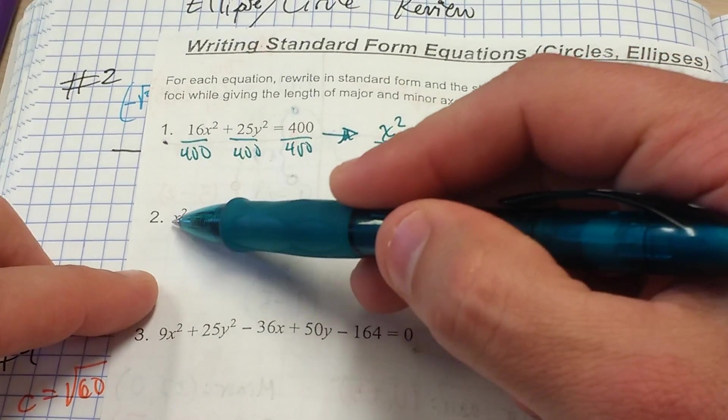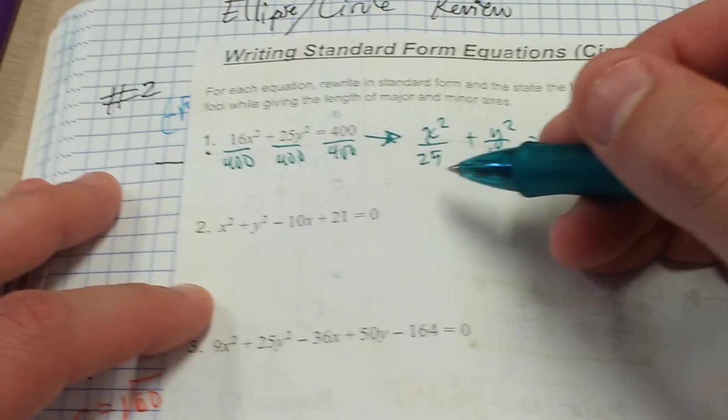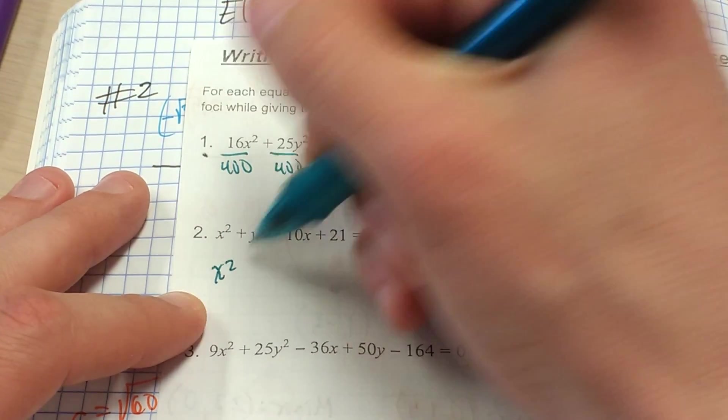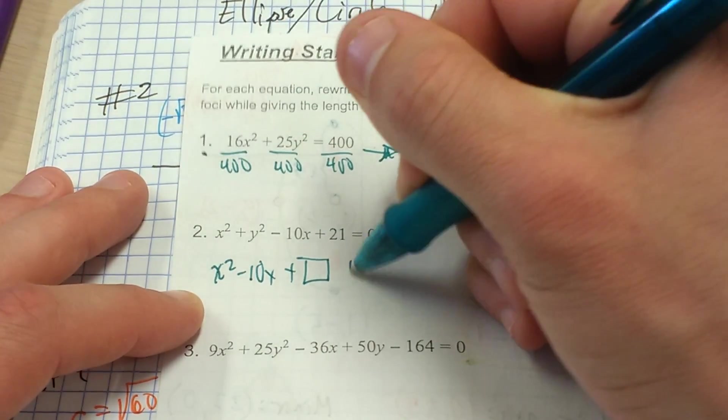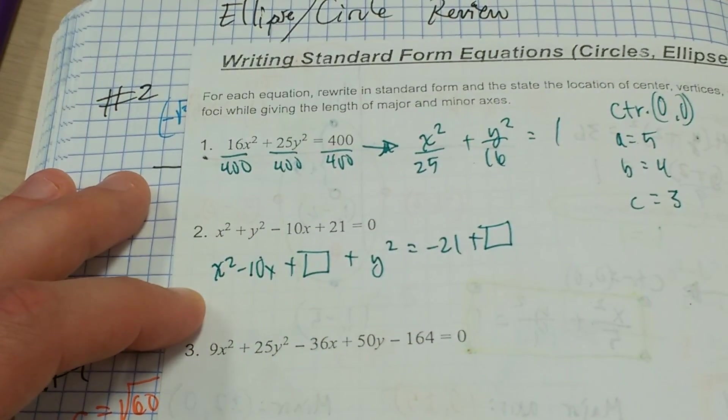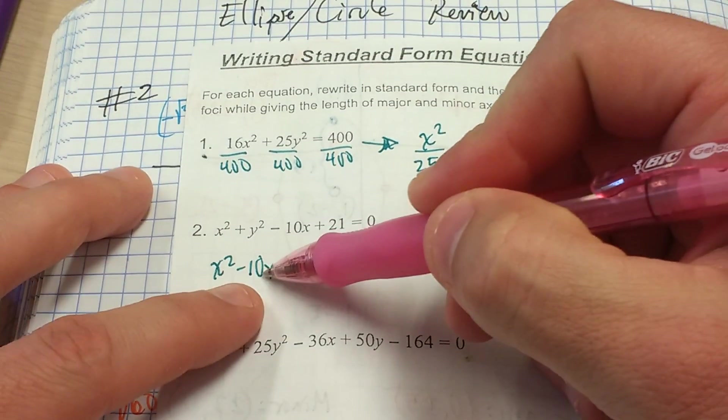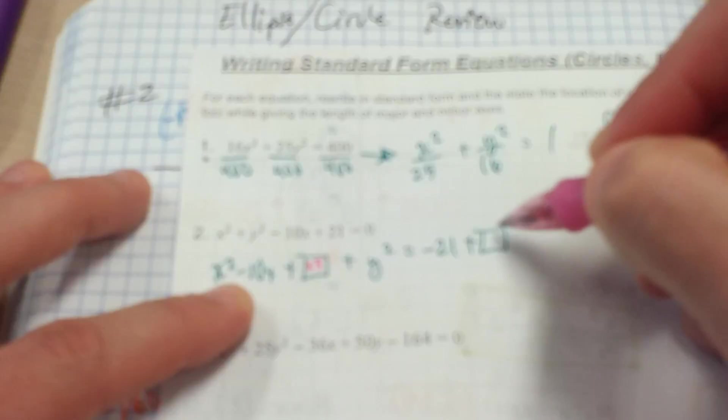If you take a look at number 2, it's a circle. How do we recognize it as such? Because x squared and y squared have the same coefficient. The only work we need to do here is to complete the square. So x squared minus 10x plus some special number plus y squared equals negative 21 plus that same special number. In order to get that special number, remember that is half the b term squared. So that's going to be half of 10 or 5 squared, 25.